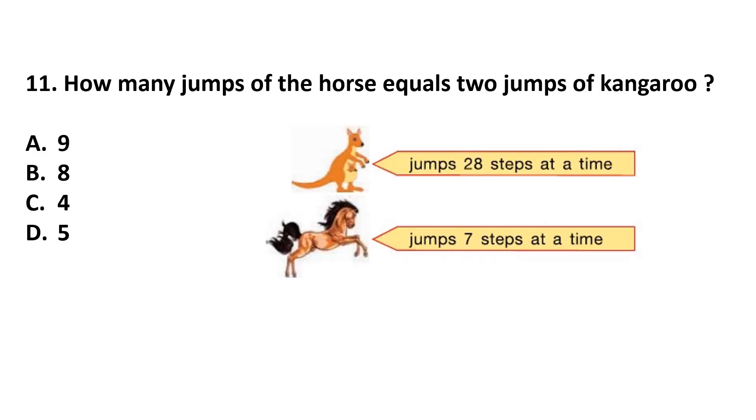Question number 11. How many jumps of the horse equals 2 jumps of kangaroo? This is given, kangaroo jumps 28 steps at a time and horse jumps 7 steps at a time. So, 1 jump of kangaroo is 28 steps and 1 jump of horse is 7 steps. Kangaroo's 1 jump equals 28 divided by 7, that is 4 steps of horse. 4 jumps of horse equals 1 jump of kangaroo.